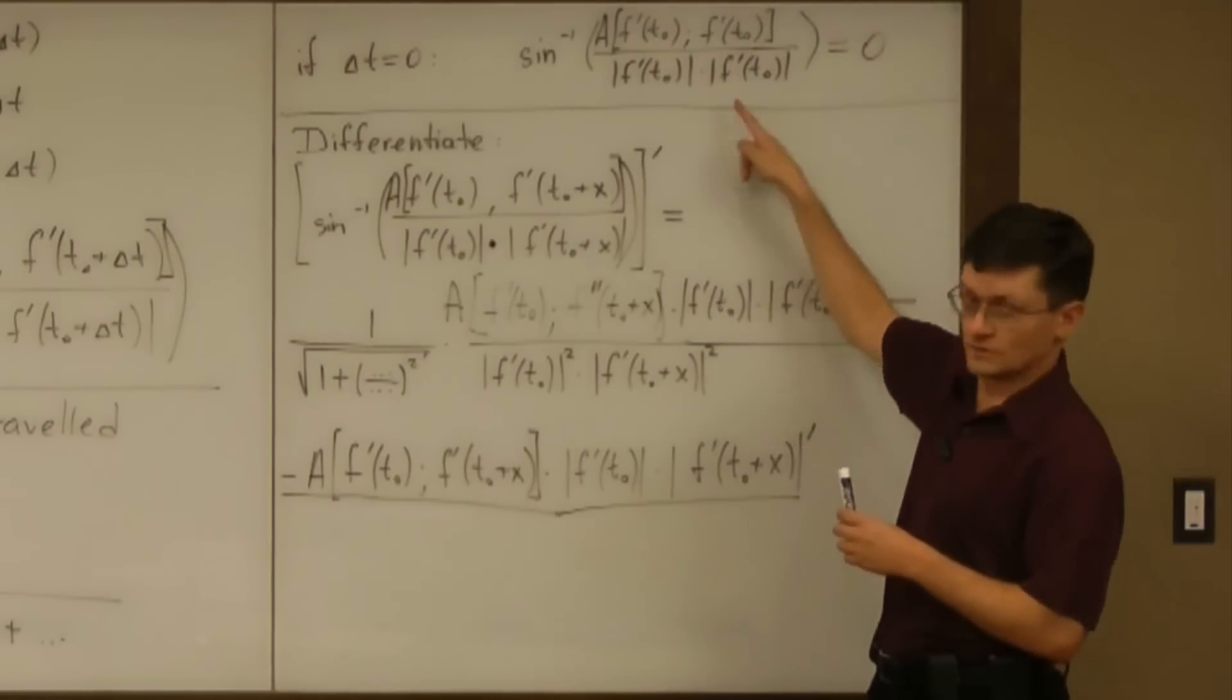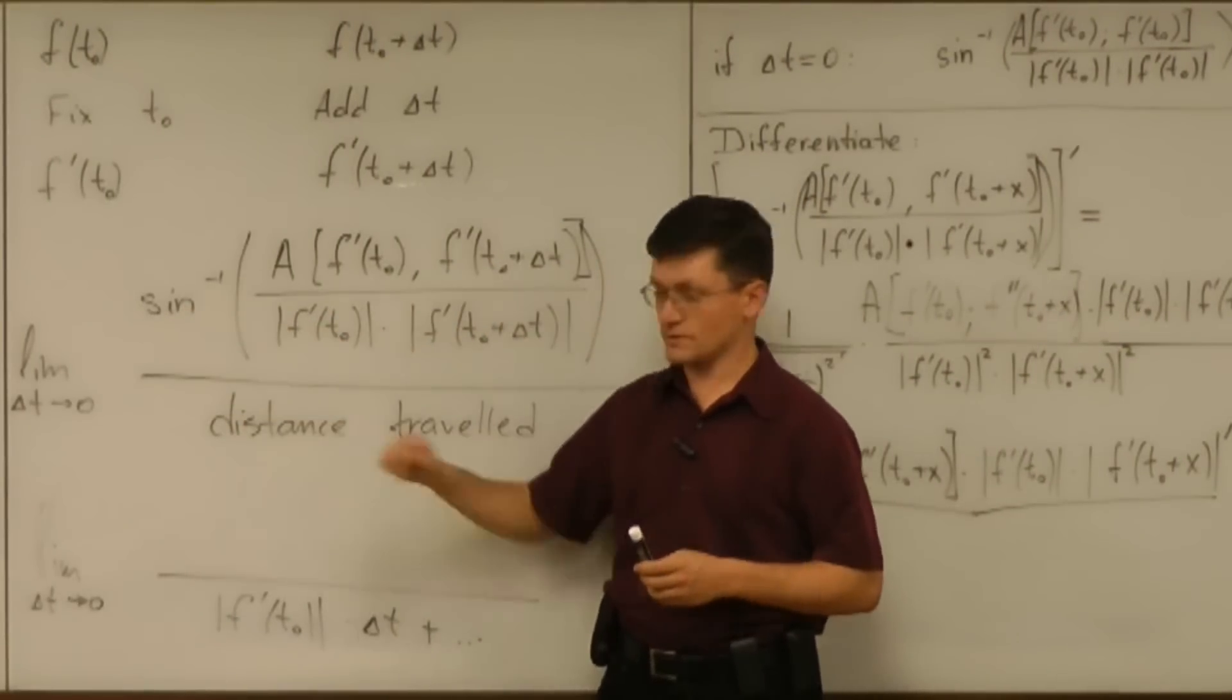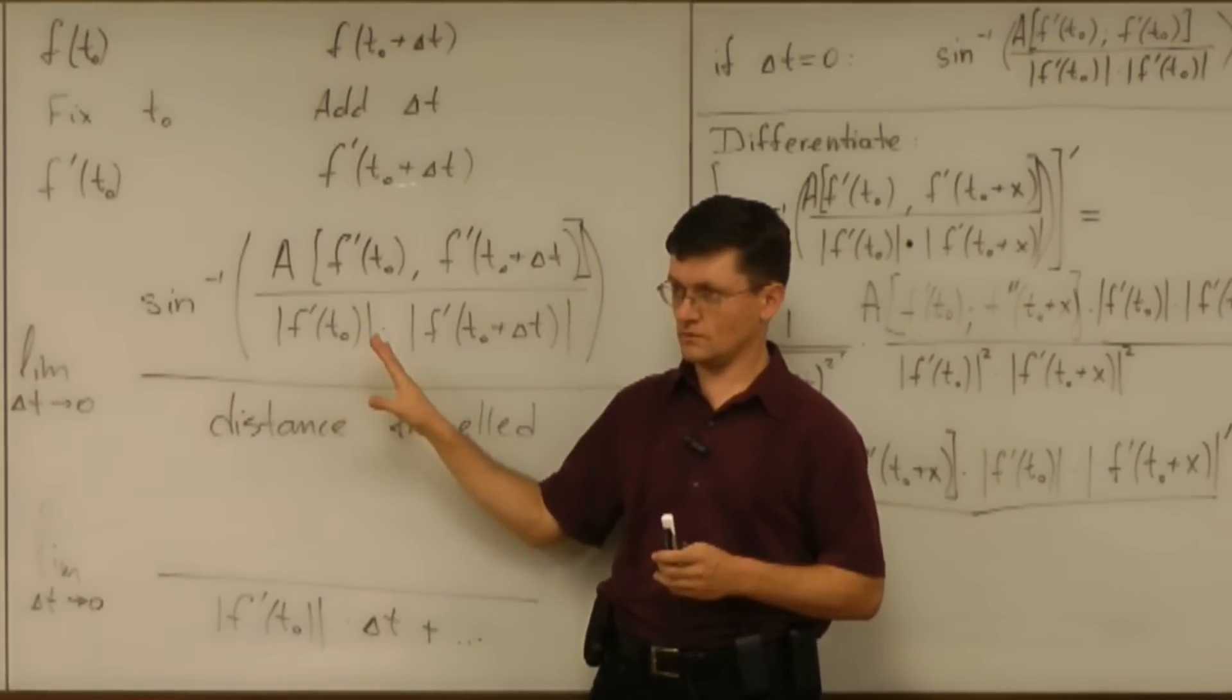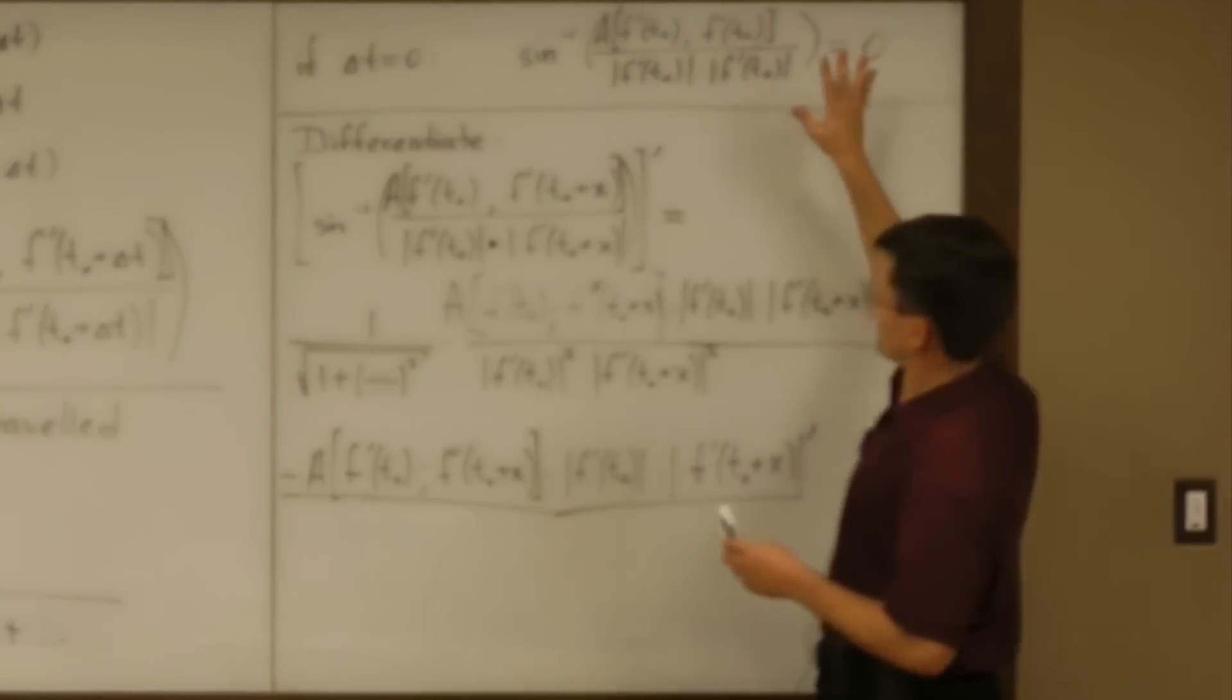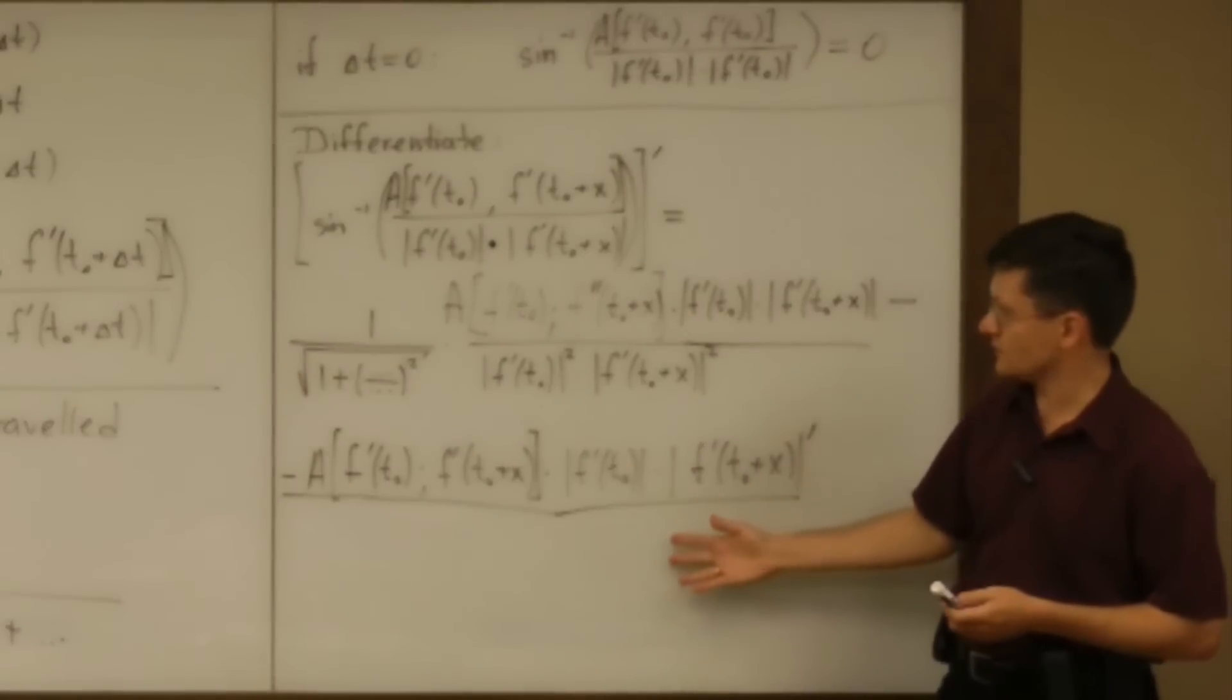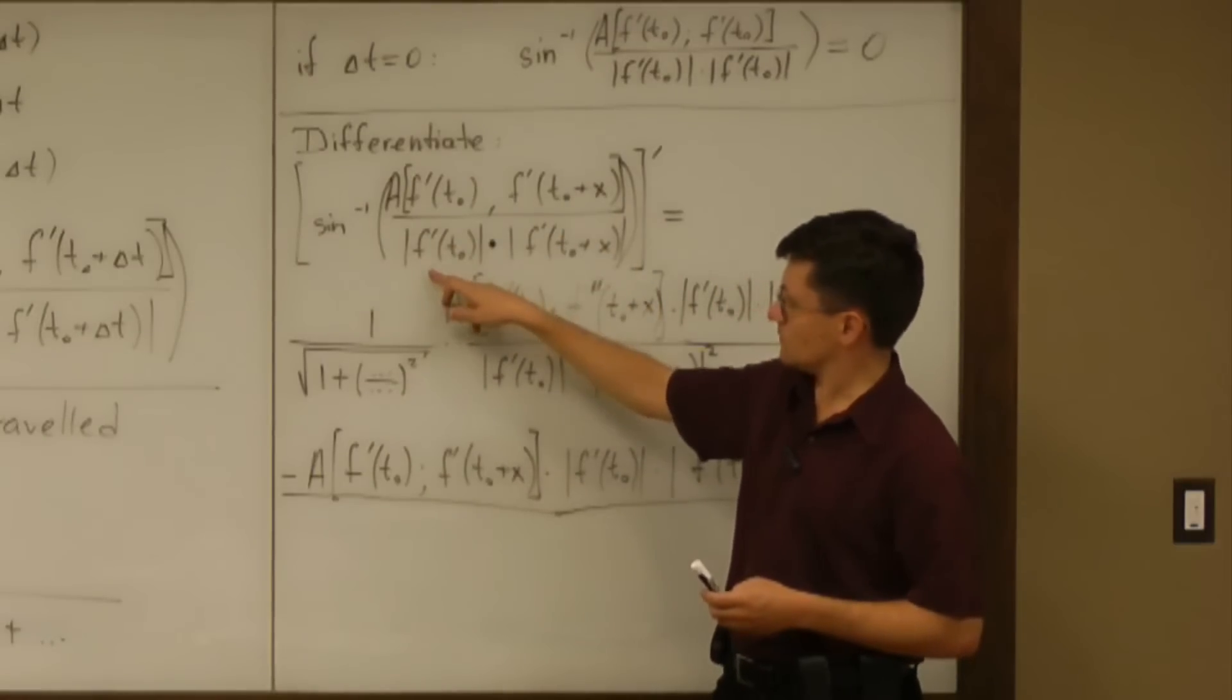So that means that we still have the same problem. If you substitute delta t equals zero into the whole thing, you will get zero divided by zero. And replacing cosine with sine didn't resolve the substitution problem. You have indefinite fraction. Okay, so that is still in place. But can we substitute x equals zero and have something interesting here? What if I substitute x equals zero into this fraction?